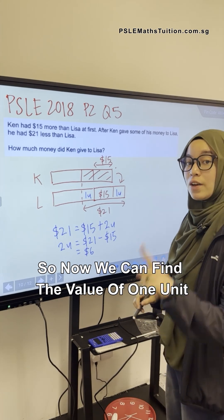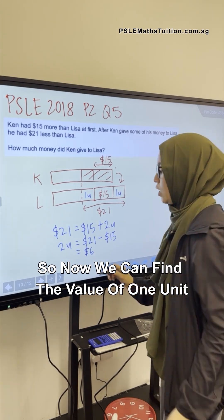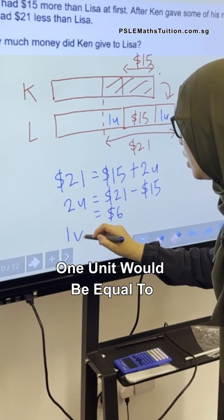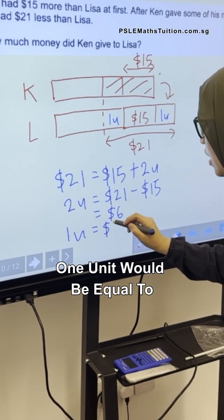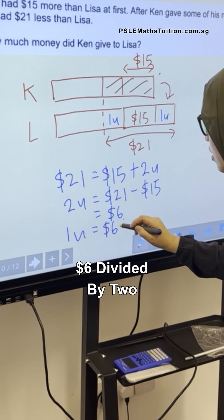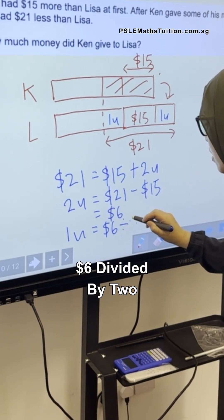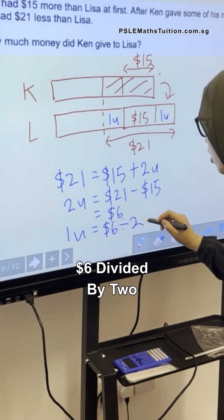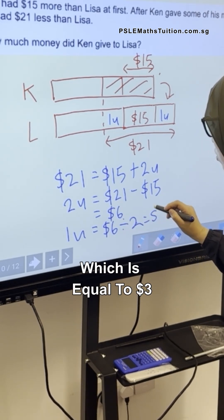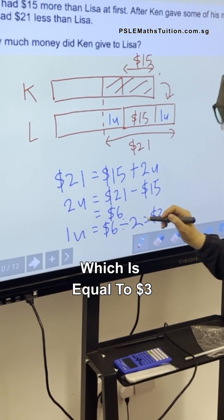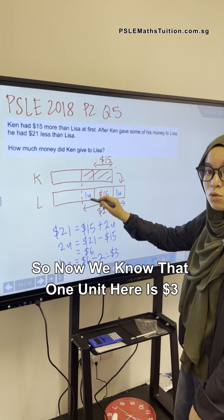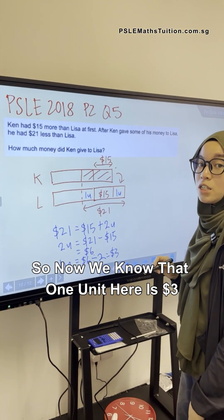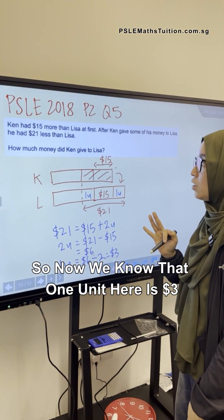So what is two units? Two units will be equal to $21 minus $15, which is $6. So now we can find the value of one unit. One unit would be equal to $6 divided by two, which is equal to $3.